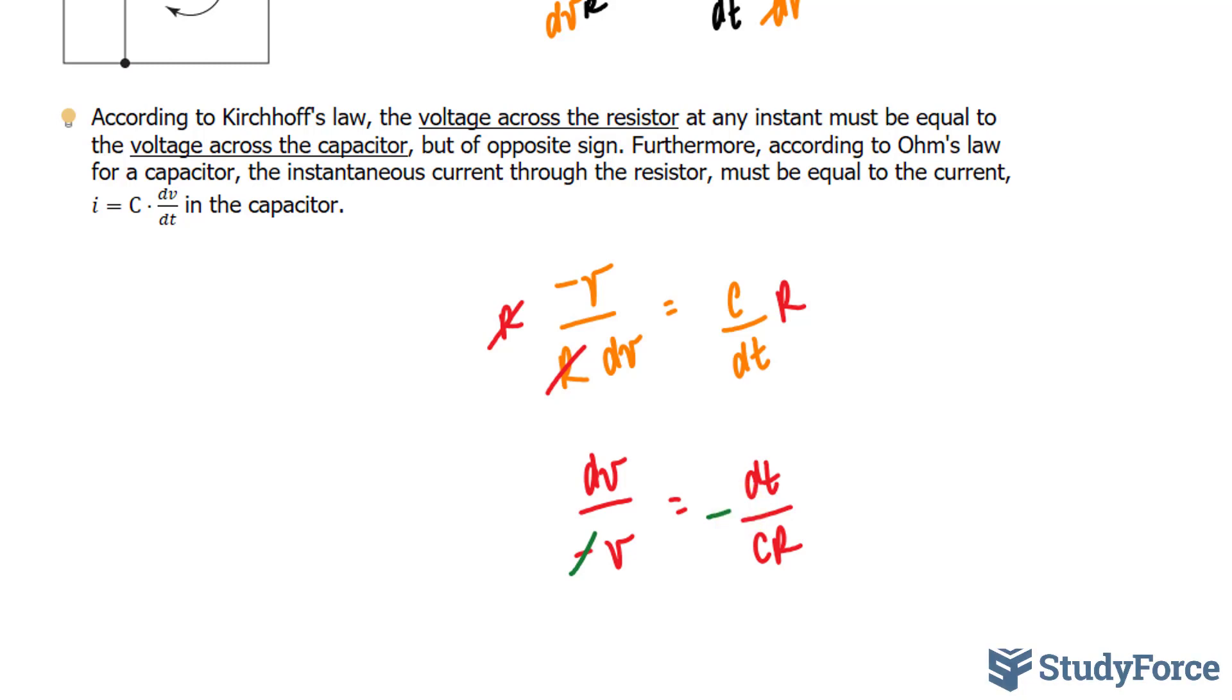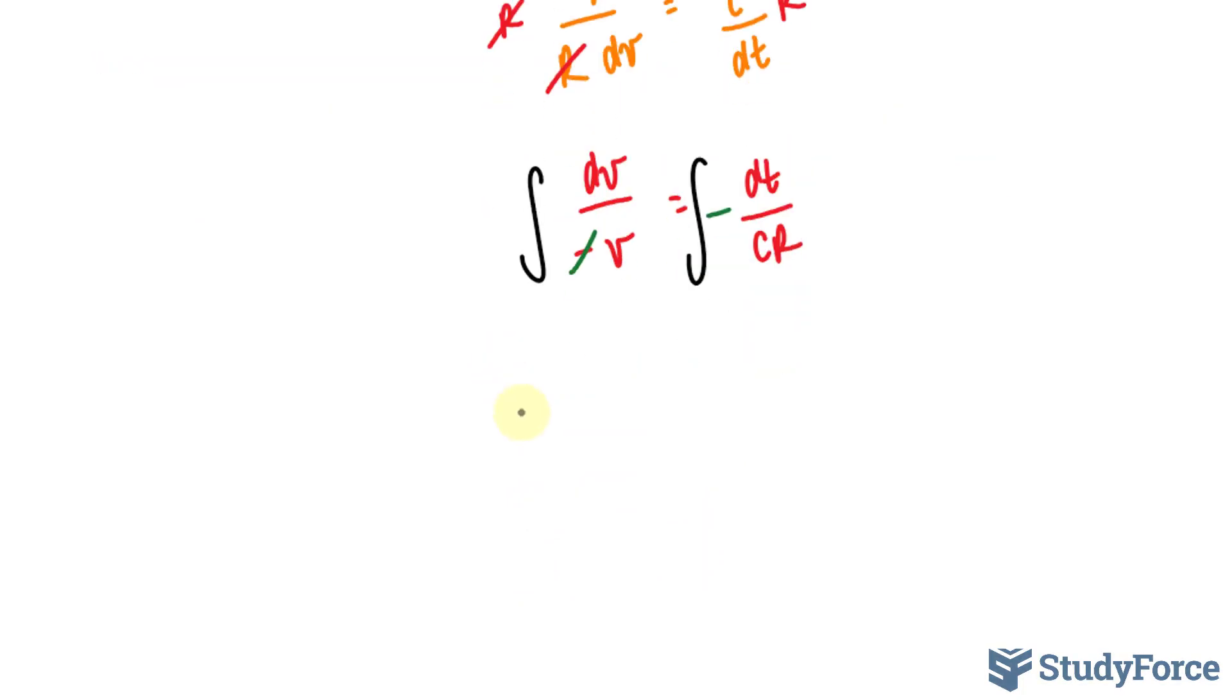Now I have to integrate both sides. And if I integrate the left side, I'll end up with ln absolute of V is equal to... And on the right side, you see this negative one over CR? Those are all constants. Pull them out. So I'm going to pull that out outside of the integral where I end up with negative one over CR. And now I get to integrate dt, which is simply t, plus my constant. Make sure you don't use C here because C might be confused with capacitance. Use the letter k.